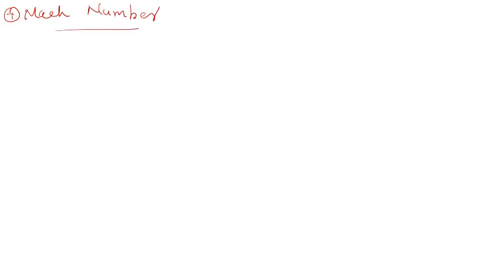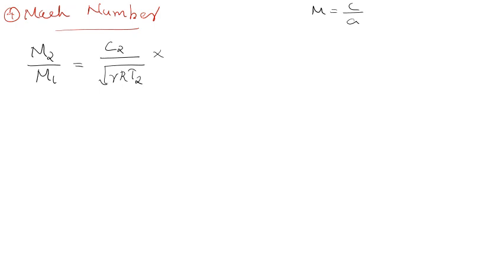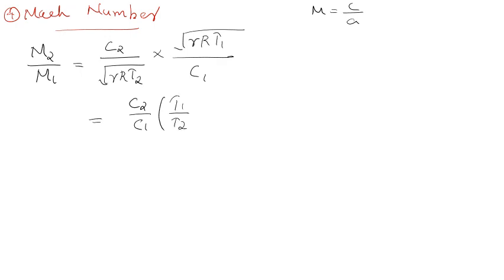Now, the Mach number. The Mach number M1 equals C1 divided by the square root of gamma R T1. This is an important governing equation.